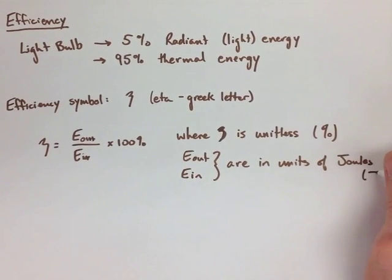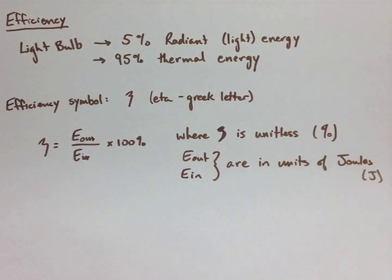The energy in will always go on the bottom of the equation and will always be the larger number. The other thing with efficiency is as long as both of our energy in and energy out are in the same measurement, they don't necessarily have to be in only joules.